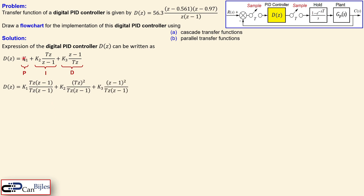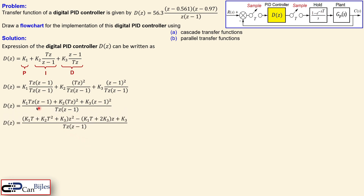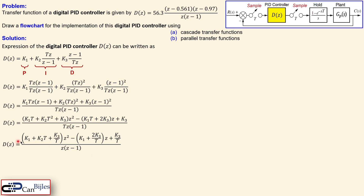We can also write it by combining these three terms using common denominators and adding them up, resulting in a second-order system. Working out the parentheses and collecting terms for z², z, and the constant, we get this expression. When we divide by T (the sampling period), you lose the T in certain places and get 2k3 over T. The reason for this is to compare this expression to the given expression.